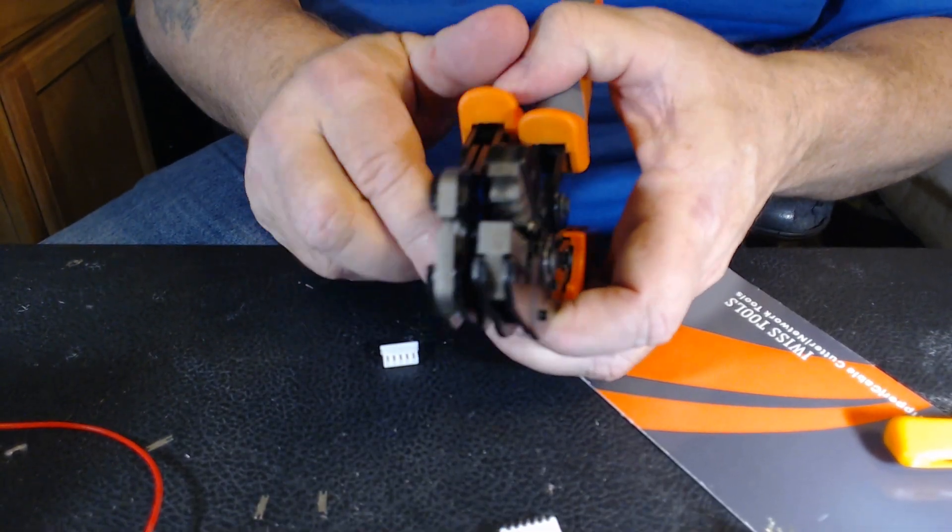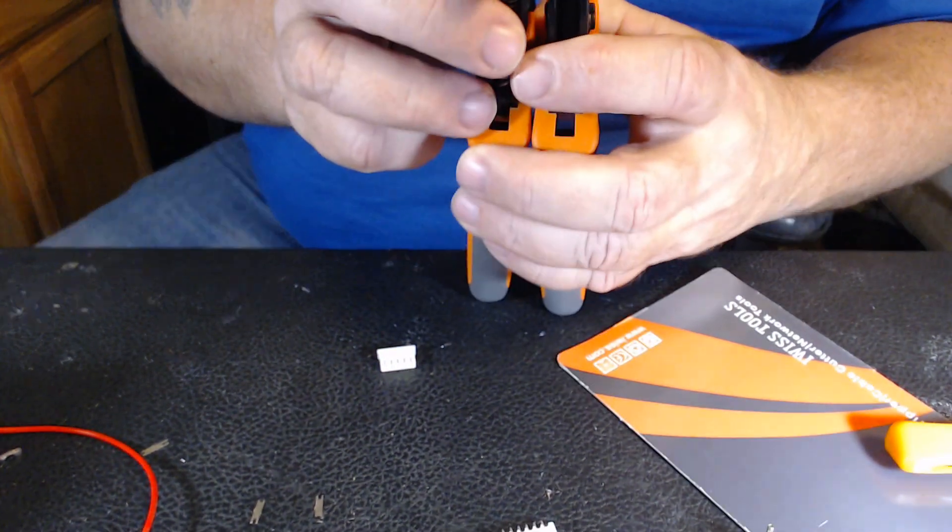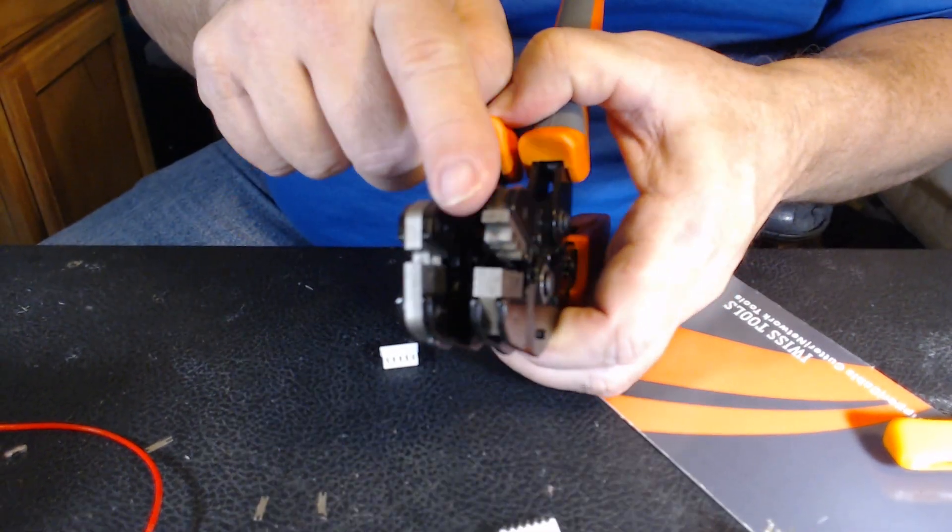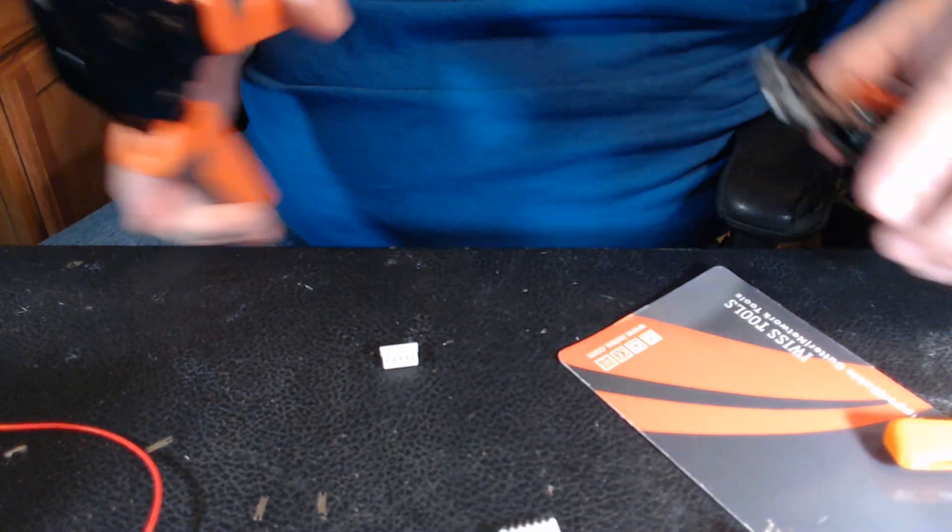The Duponts are, this is the Dupont. That's the Dupont. The wide one's the Dupont. The narrow one is for the JST.